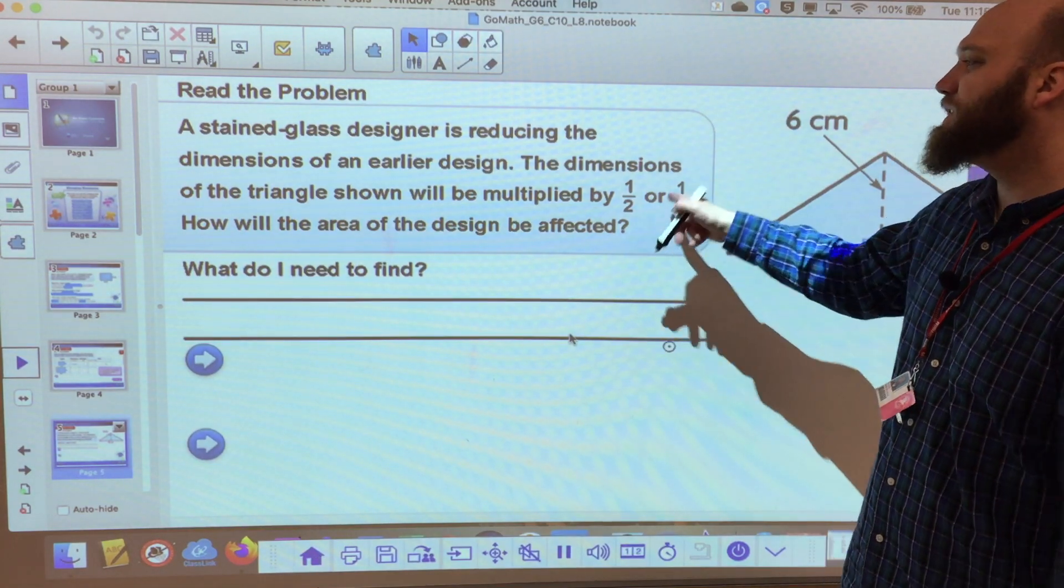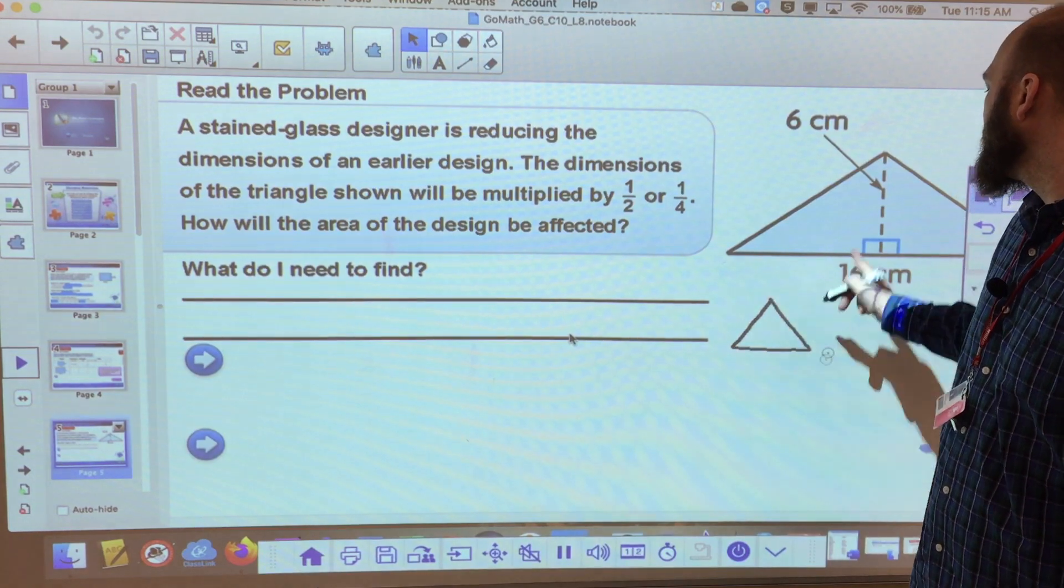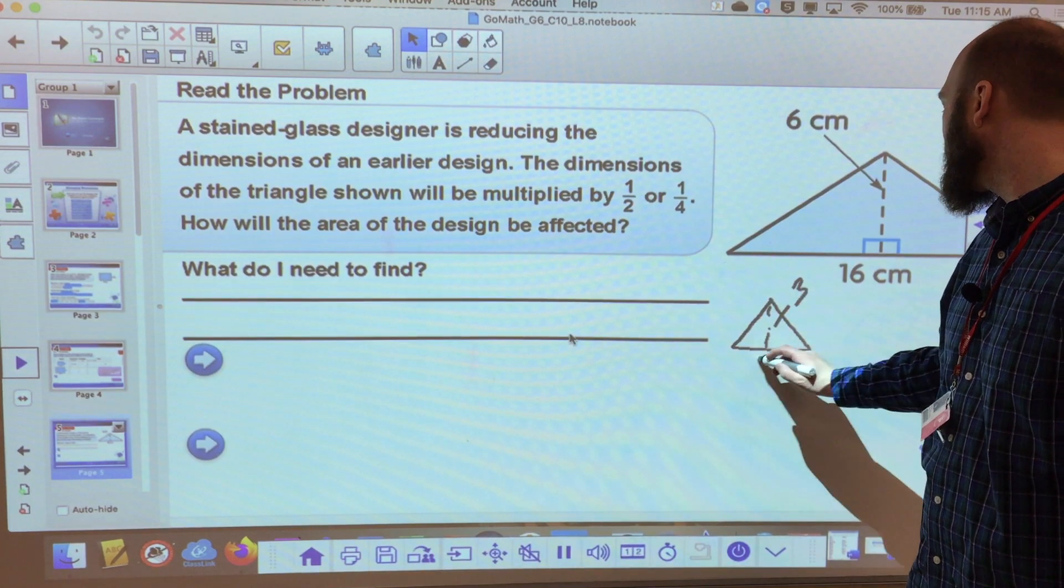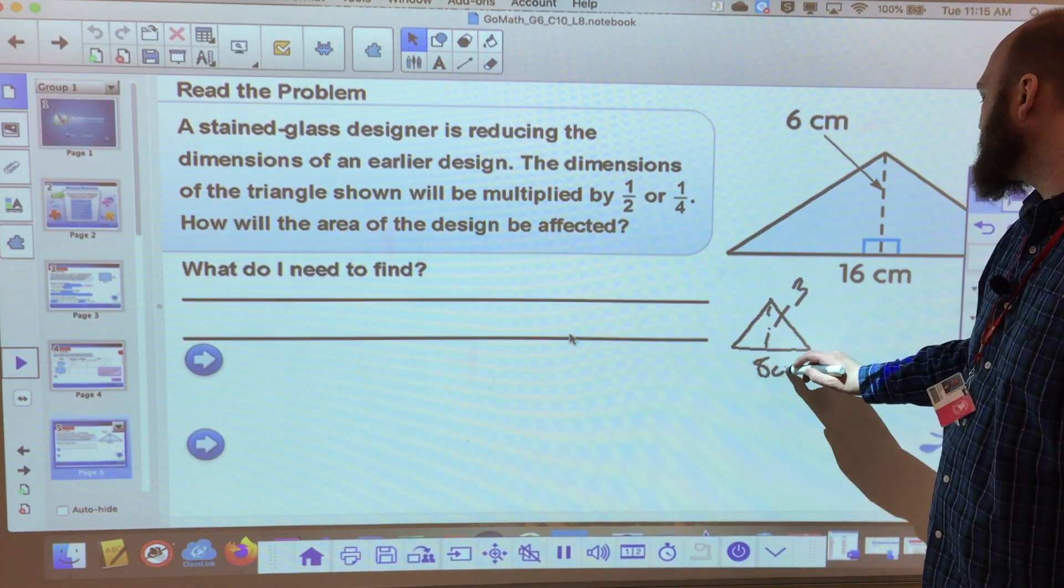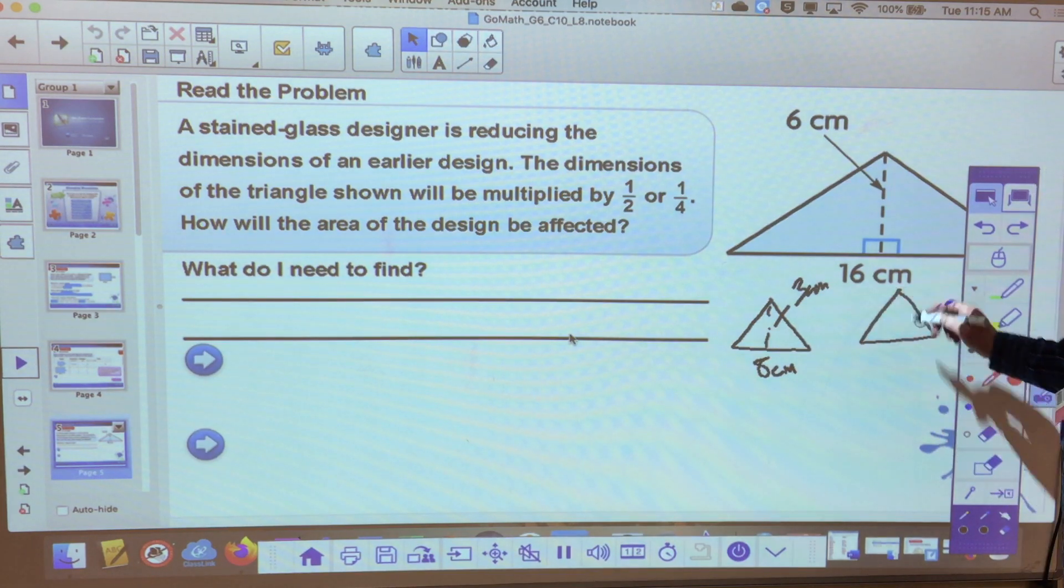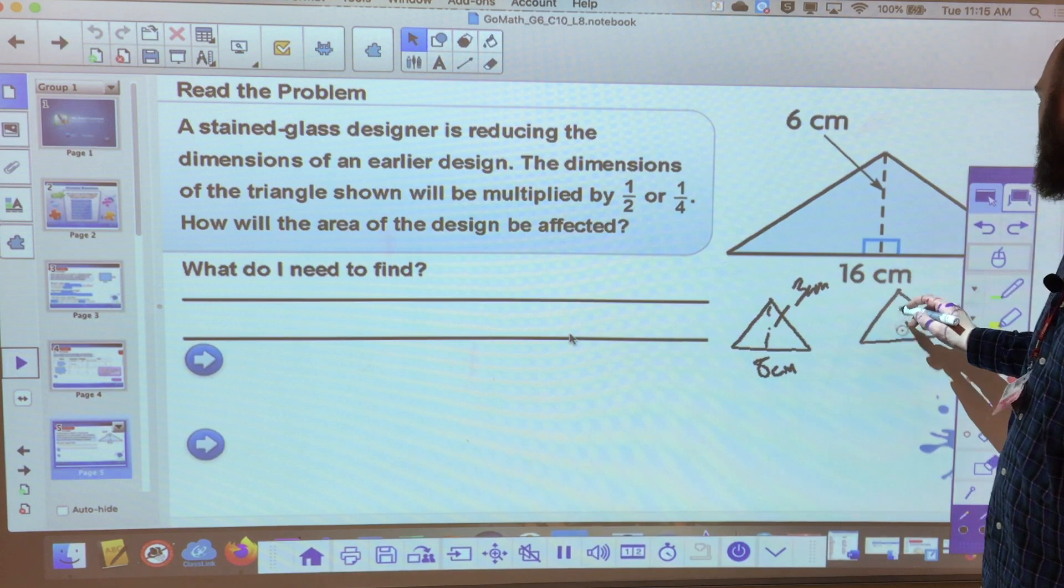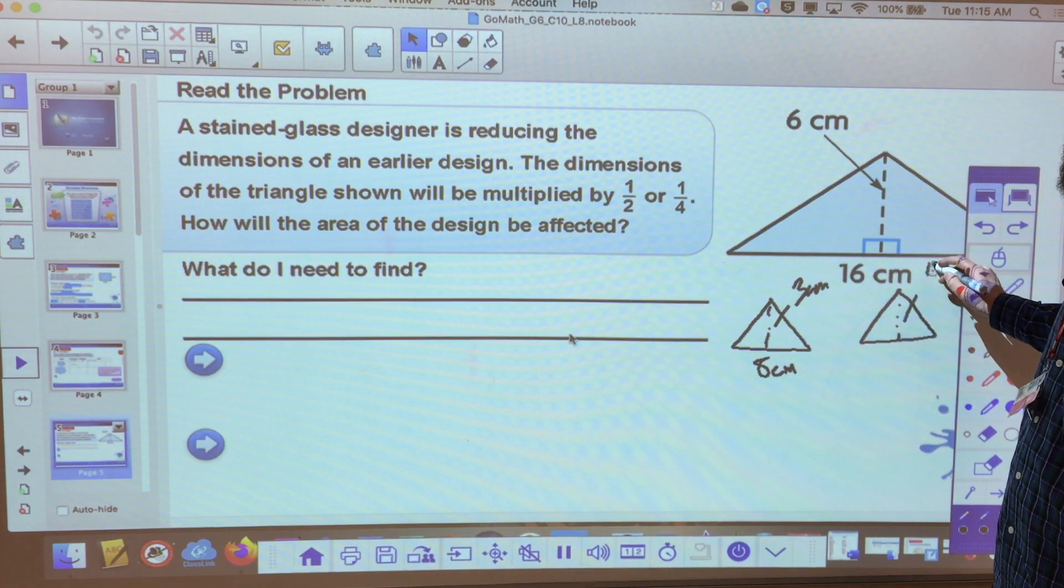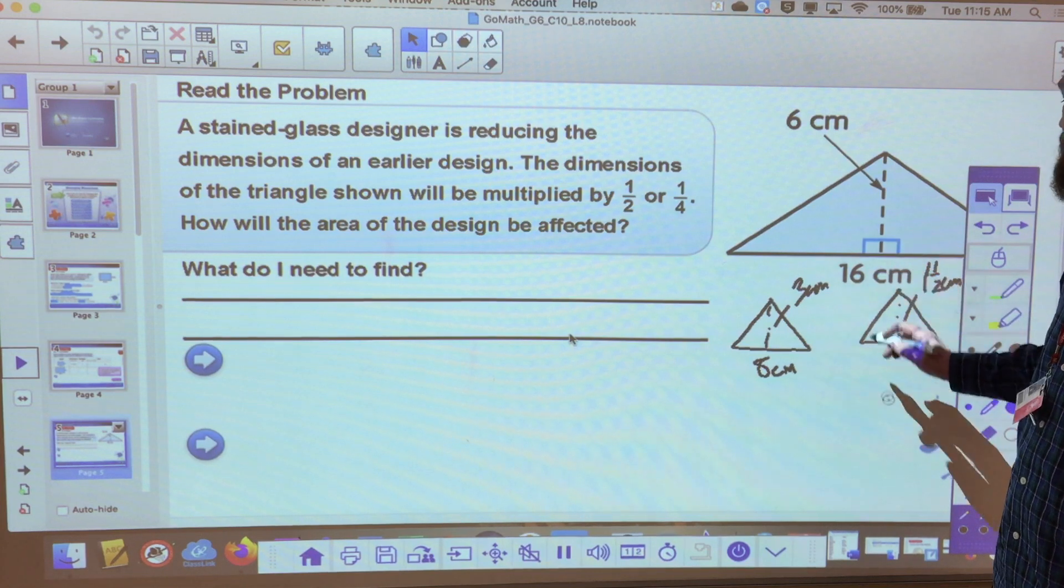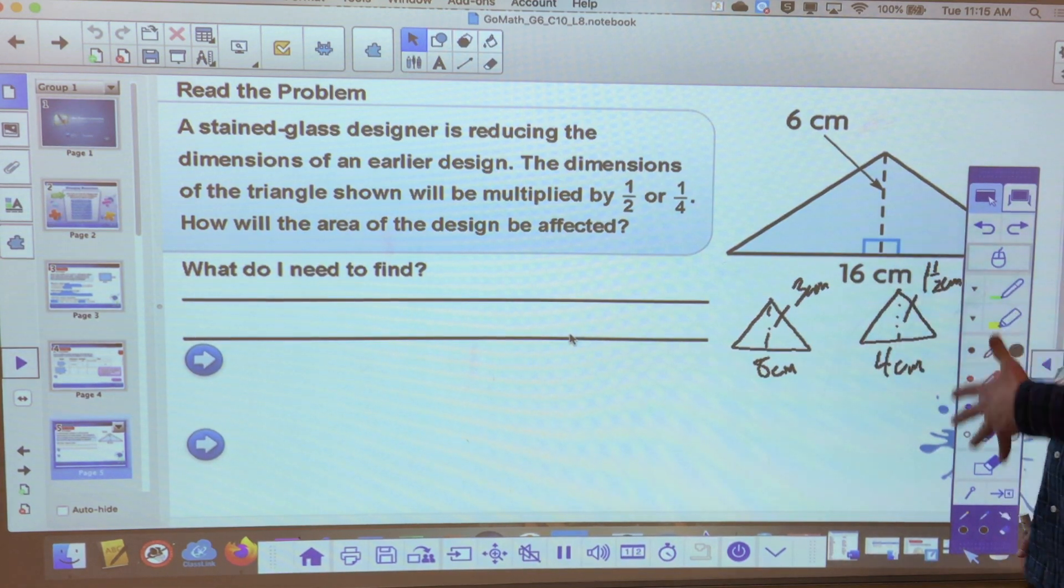Instead, take your dimensions and figure out my new triangle. What is half of my other triangle? Well, my new height would be three, and my new length would be eight. What if it was one fourth? Well, six times one fourth would be one and a half. And 16 times one fourth would be four centimeters.